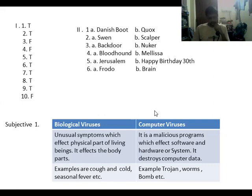Number four — a computer virus can be removed from the system through vaccination — that is false. Question number five — a computer virus is destructive in nature — that is true. Question number six — a system gets affected by the virus automatically — that is true. Question number seven — a computer virus replicates itself within the amount of available memory — that is also true.